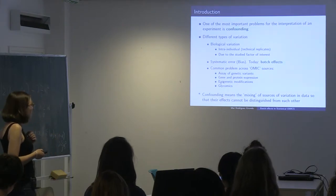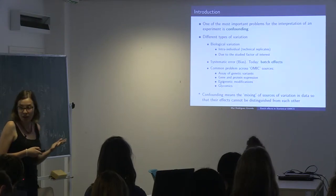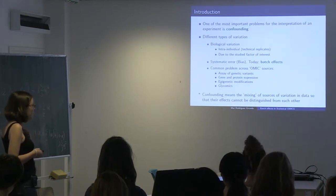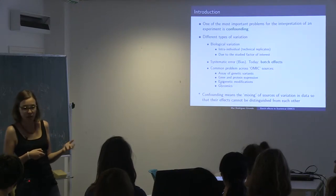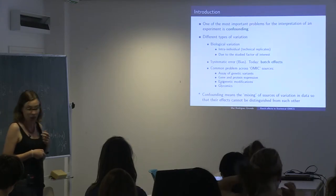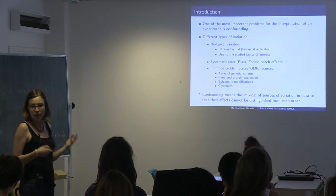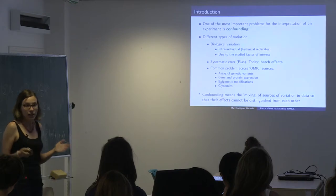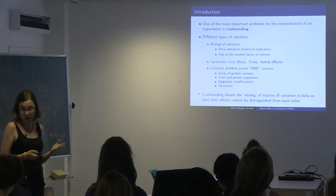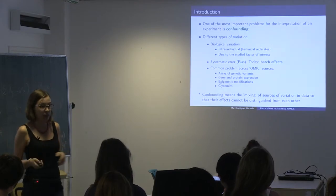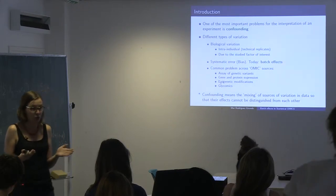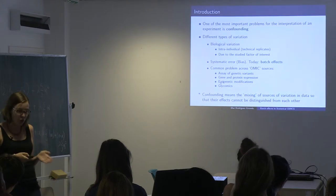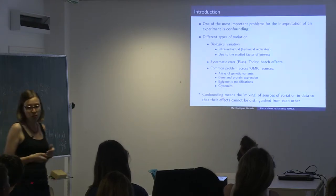These are examples of systematic errors. Because of the importance they have in omic sources, batch effects are also an important source of bias, and we will talk about them today. They have been detected in several studies using different omic sources — in evaluations of genetic variants, and especially in gene and protein expression experiments, but also related to epigenetic modifications like methylation quantification, and experiments related to glycomics.